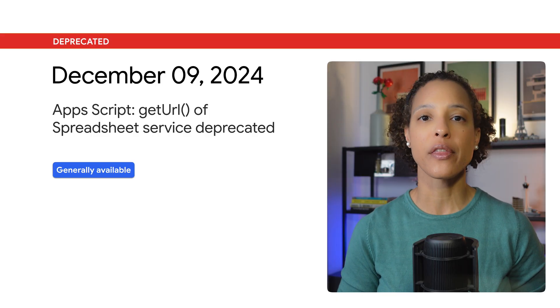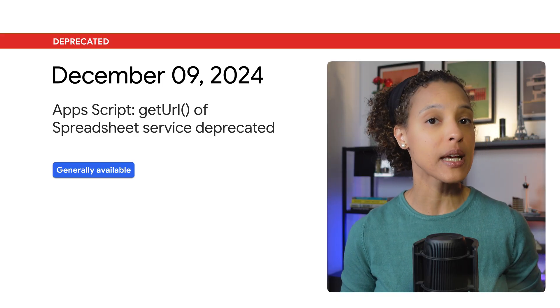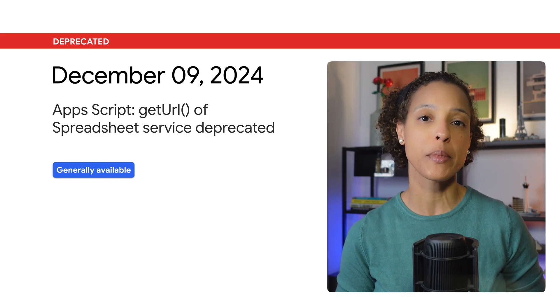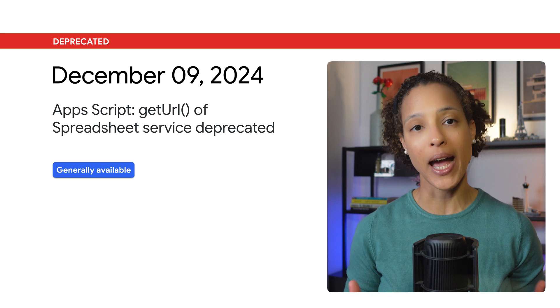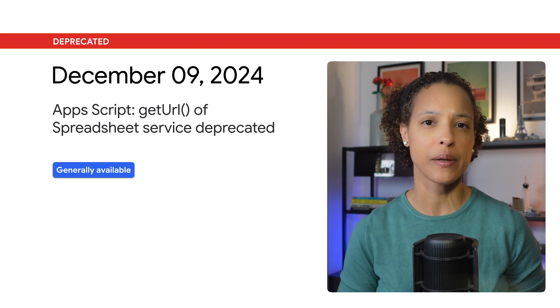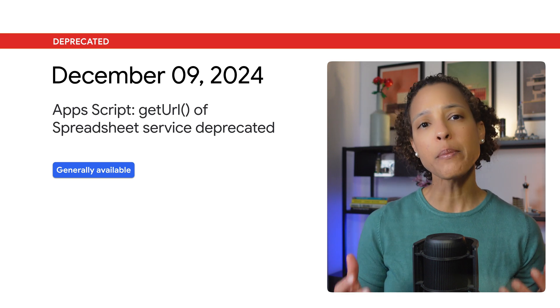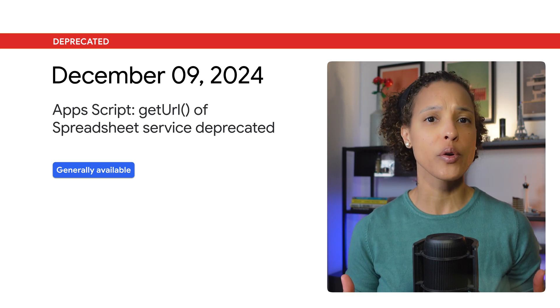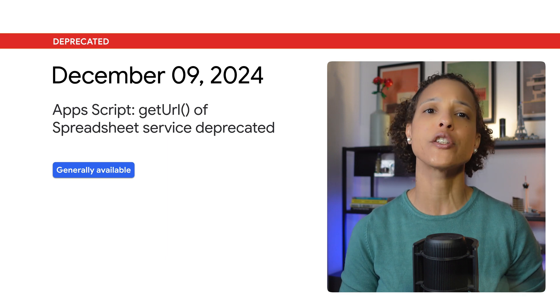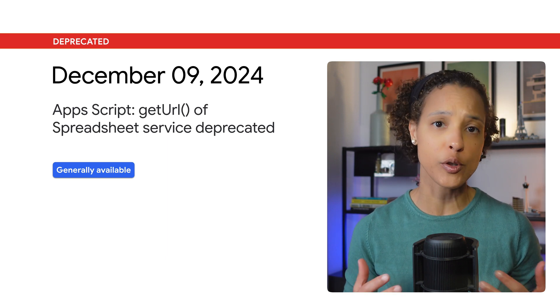The Get URL method for the CellImage, CellImageBuilder, and OvergridImage classes of Apps Script's Spreadsheet service has been deprecated. An image's source URL isn't available, regardless of how the image is inserted into a spreadsheet.